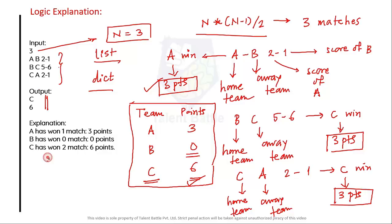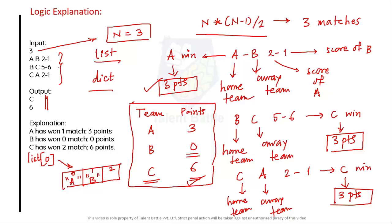The list, at index 0, will maintain the home team, index 1 the away team, and index 2 the score like '2-1'. So list position 0 holds 'A', position 1 holds 'B', and position 2 holds '2-1'. We split on the dash symbol to separate the two goal values for comparison.